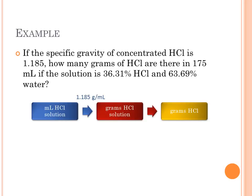How do we get at that? We can use a density of 1.185 grams per milliliter taken from the specific gravity, and then use the 36.31% by mass to get at the grams HCl in the solution. And we'll convert that to a dimensional analysis conversion factor.